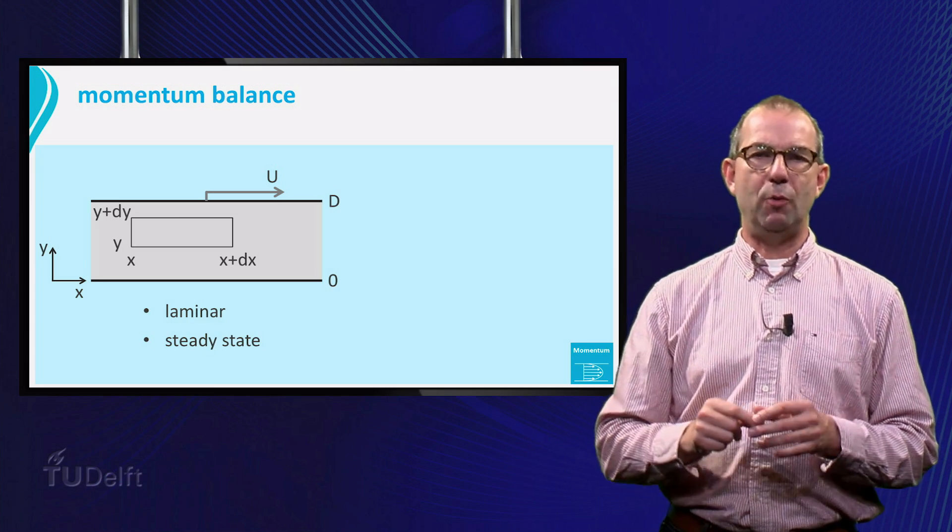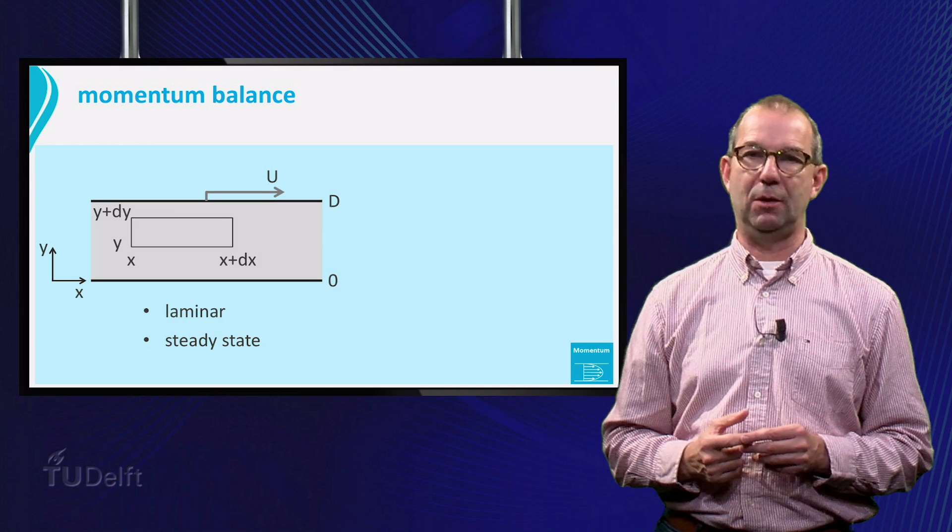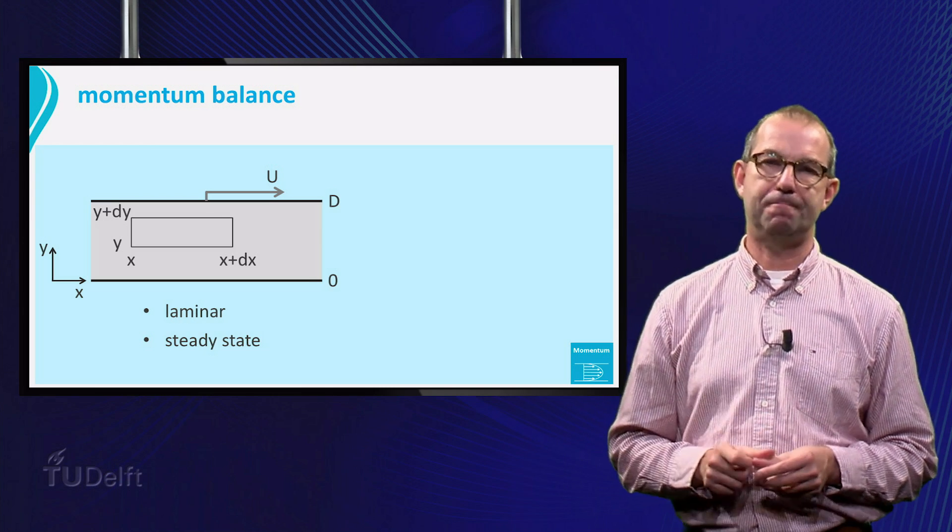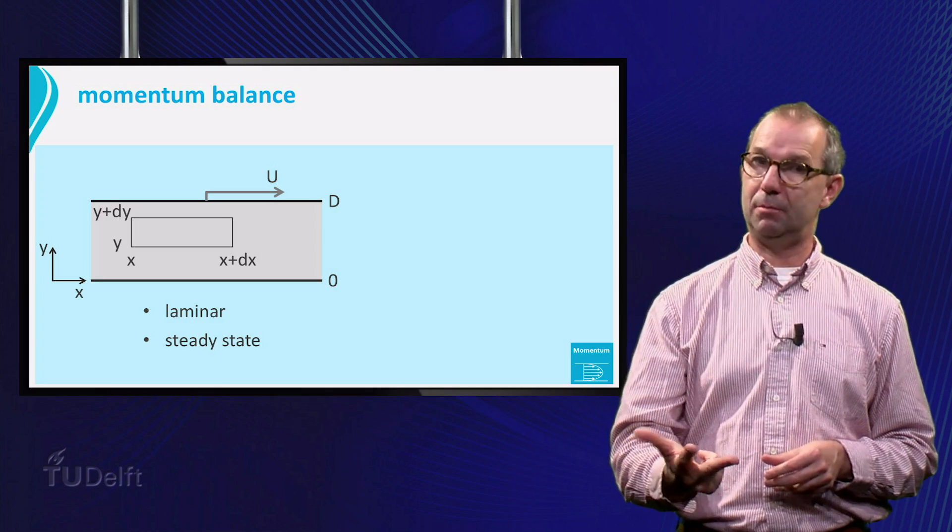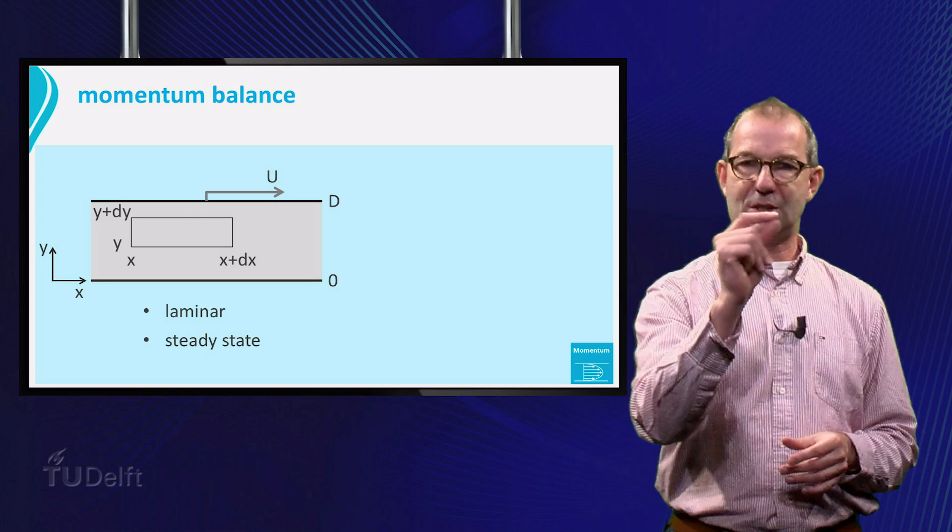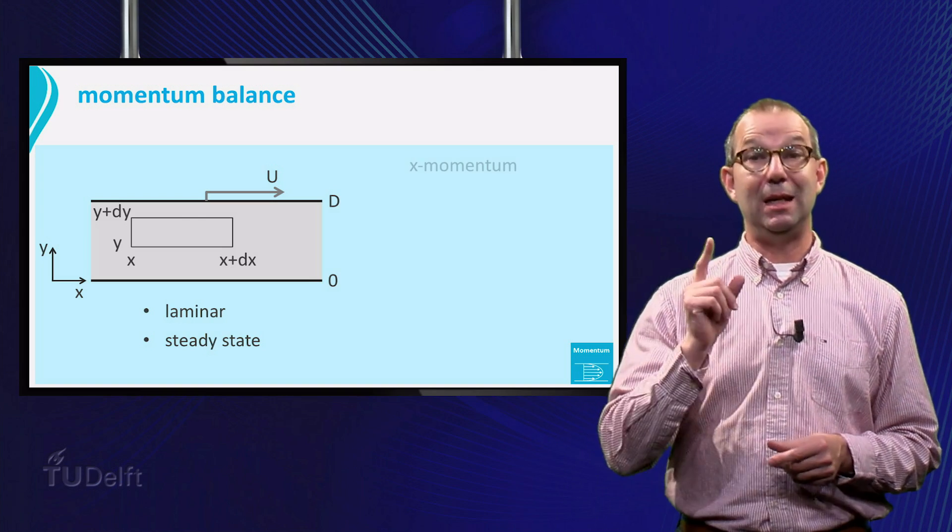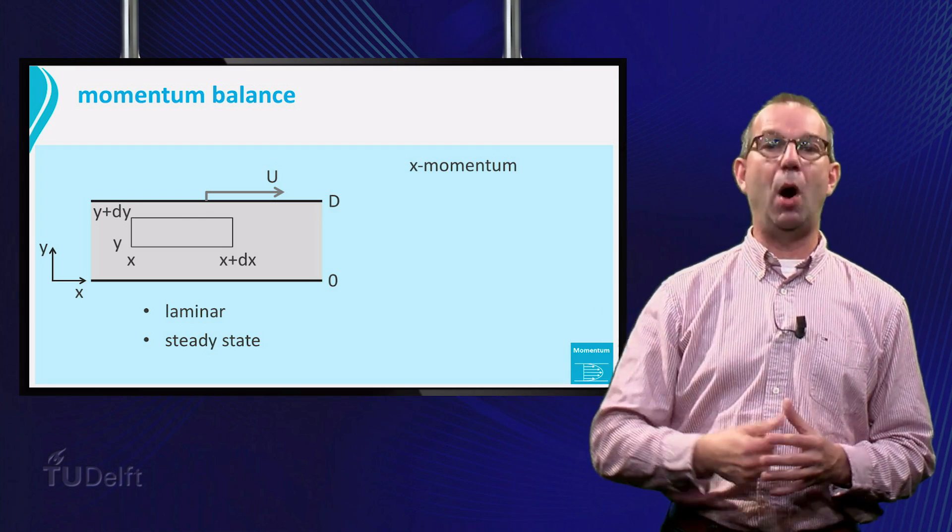Momentum is a vector, so we first have to decide which component of momentum we talk about. Think for a minute. Is it x, y, or z momentum? Okay, we expect flow in the x-direction, thus it is x-momentum. But it can be transported in the y-direction.